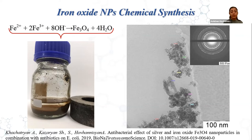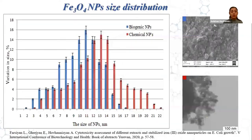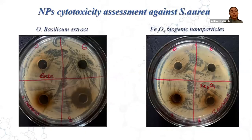The nanoparticles have a core-shell structure. Nanoparticle size distribution varies for chemical and biological ones: we have a size distribution from 2 to 70 nanometers with the most pronounced size of 11 nanometers for biogenic nanoparticles, and from 3 to 22 nanometers for chemical nanoparticles.